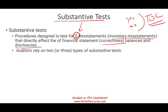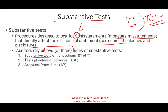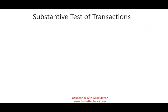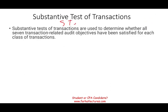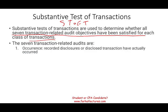The three types of substantive testing are: substantive test of transactions, test of details of balances, and analytical procedures. The substantive test of transactions — or ST of T — is used to determine whether the seven transaction-related audit objectives have been satisfied for each class of transaction. Here you are looking at the transaction itself, like a debit and a credit.